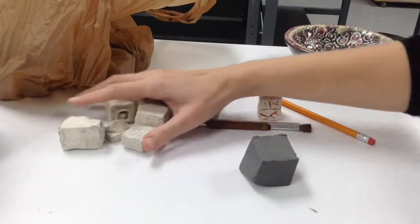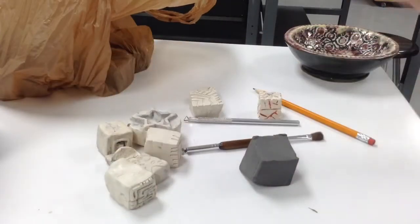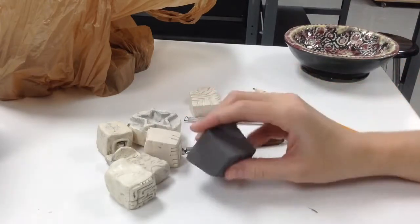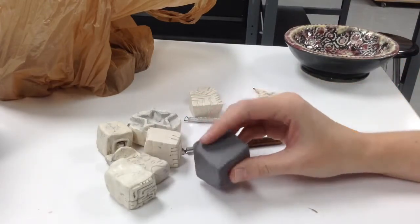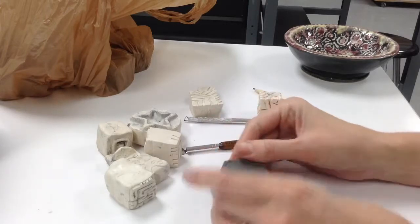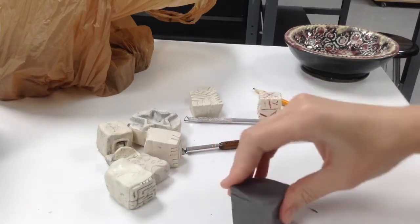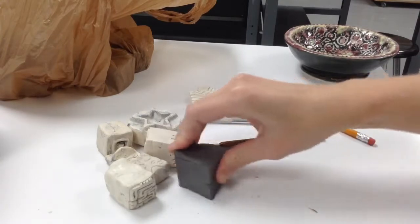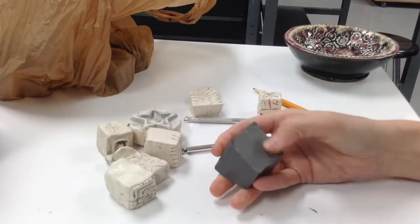In order to make a stamp you have to keep a couple things in mind. Unique original designs, no copyrights. Start off with clay that is leather hard. You want to have that stiff surface to carve into, kind of like what we did on our architecture tiles where you had that surface to carve away.